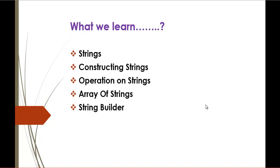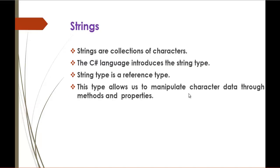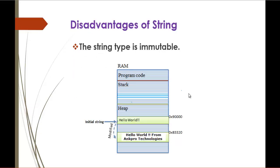Right now we will explore the disadvantage of string. The major disadvantage of string is it is immutable — it means that a string, once created, cannot be changed or altered. Whatever value is stored for a string cannot be modified. For example, if I create a string called 'Hello World', that will occupy a memory space on the heap.